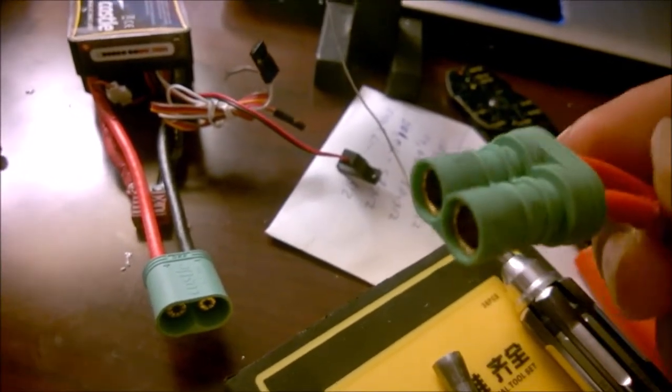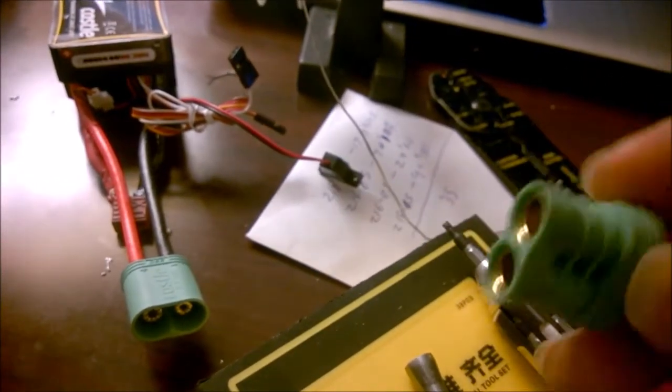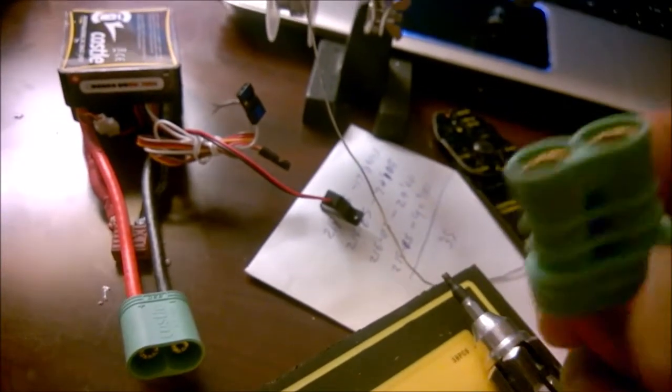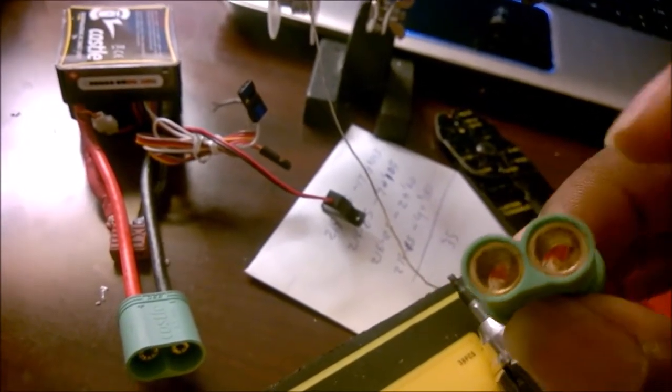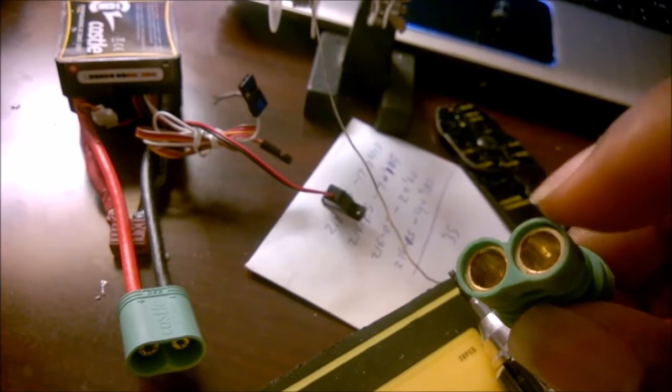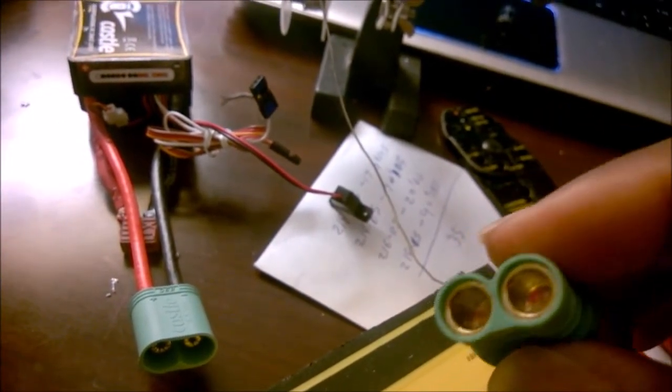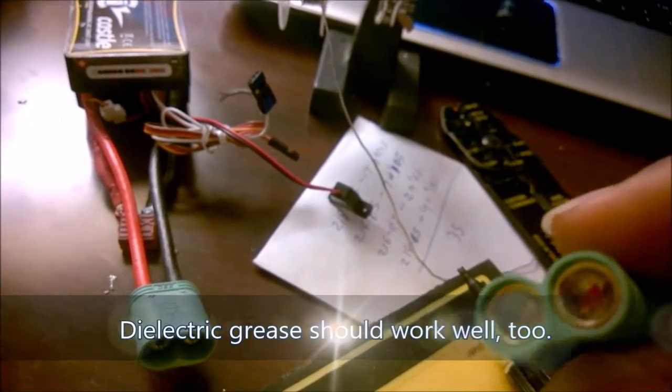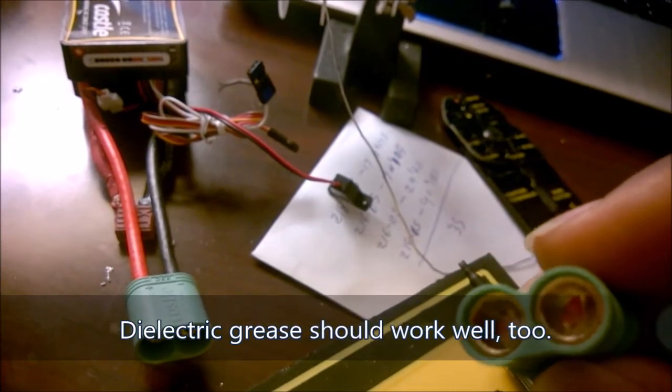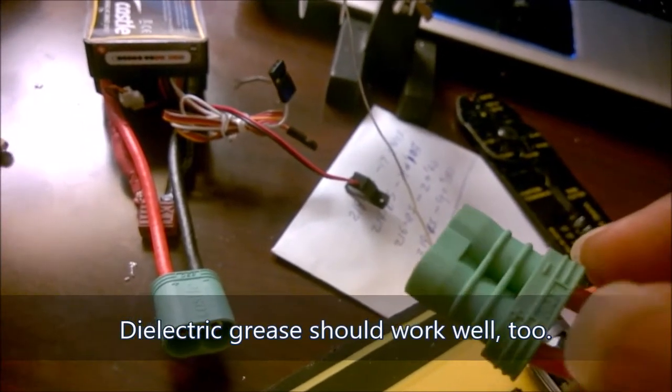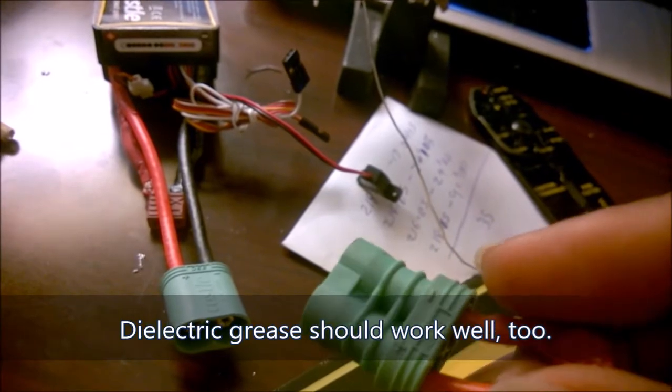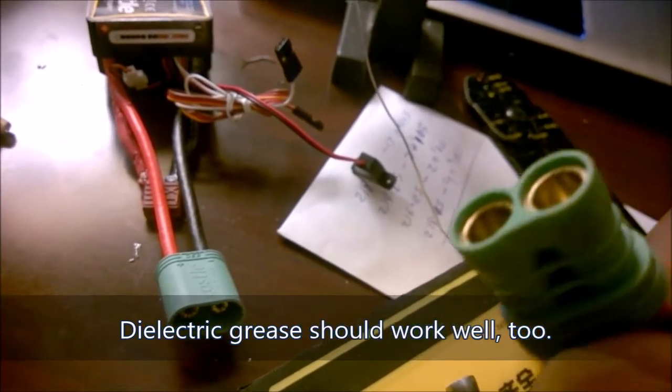Another little trick that I use to keep these things from binding up is I use a little bit of silicon lubrication inside the battery side connector, and that lets them slide back and forth slightly and out without getting all bound up. Because these things can actually have a lot of friction and they can be a bear to take apart if you don't have any kind of lubricant in there.